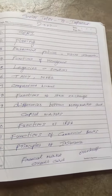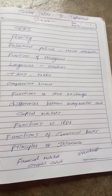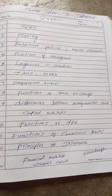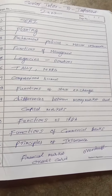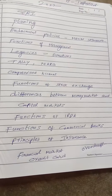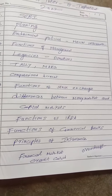You have to write a very important question — differences between money market and capital market — that is also an important question. What are the functions of IRDA, Insurance Regulatory Development Authority? The functions of commercial banks, like collecting deposits and lending of money. And principles of insurance — insurable interest, utmost good faith, like this you have to write.